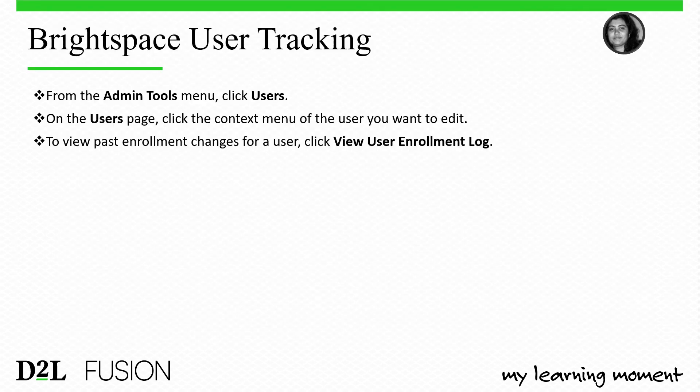To test this in Brightspace: from the Admin Tools menu, go to User Tracking. On the Users page, click the context menu of the user you want to review. You can view past enrollment changes via the View User Enrollment Log or current log.